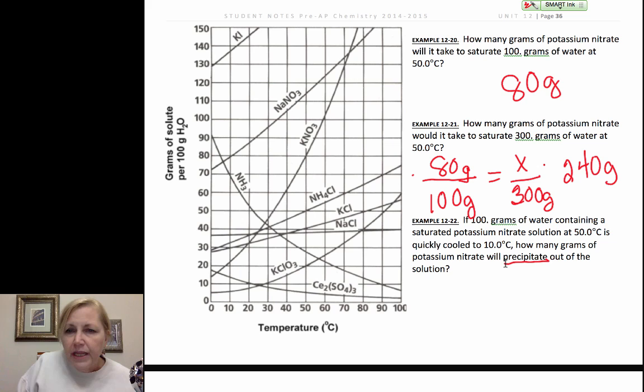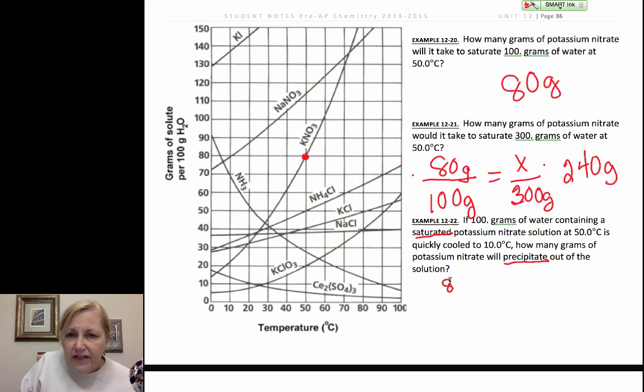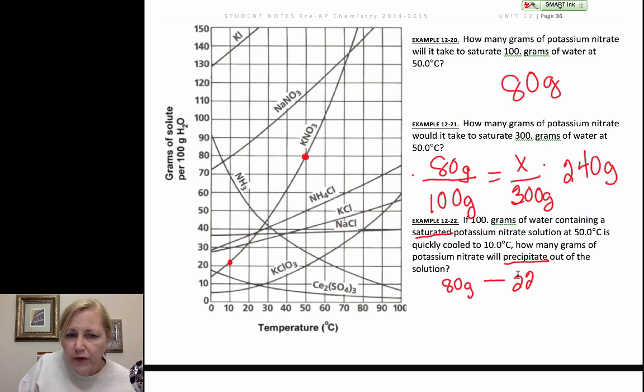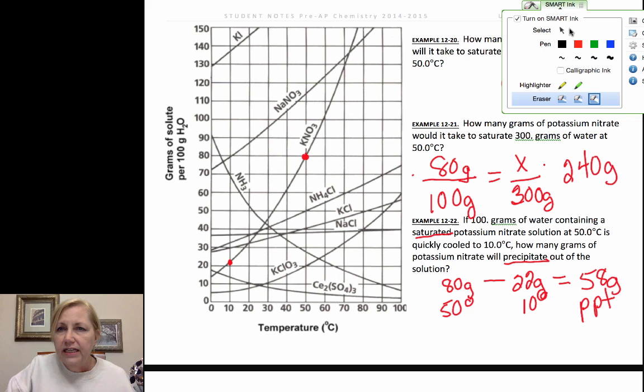Now, the next one asks, how much will precipitate out? So, I have a saturated solution of potassium nitrate. So, I'm at 50 degrees. There's my saturated solution, and I have 80 grams at 50 degrees. How much would precipitate out if I lowered it to 10 degrees? So, at 10 degrees, all that will dissolve is, I'm going to estimate that to be about 22 grams. That last digit's uncertain, so don't get hung up if we're off a little bit. So, if this is at 50 degrees, and this is at 10 degrees Celsius, then all of the difference is going to precipitate out. So, about 58 grams of precipitate would end up on the bottom of my beaker. So, that is a second type of problem.